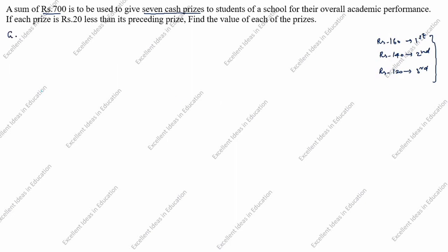The sum, meaning given data: SN is given as 700. There are 7 cash prizes, so N is equal to 7. If each prize is 20 less than its preceding prize, so D is given as minus 20 — less than means minus. To find the first prize, the first prize is A; we need to calculate A.